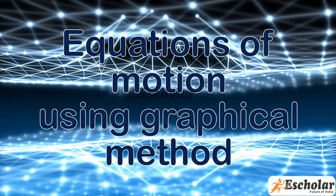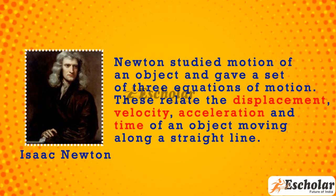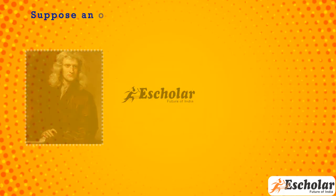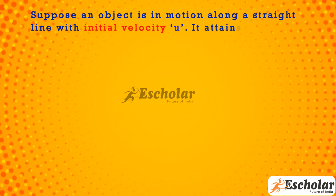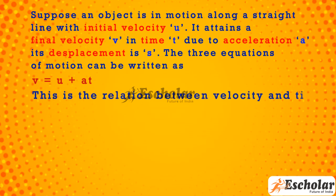Equations of motion using the graphical method. Newton studied the motion of an object and gave a set of three equations of motion. These relate the displacement, velocity, acceleration, and time of an object moving along a straight line with initial velocity u, final velocity v, time t, acceleration a, and displacement s. The first equation is v = u + at, the relation between velocity and time.